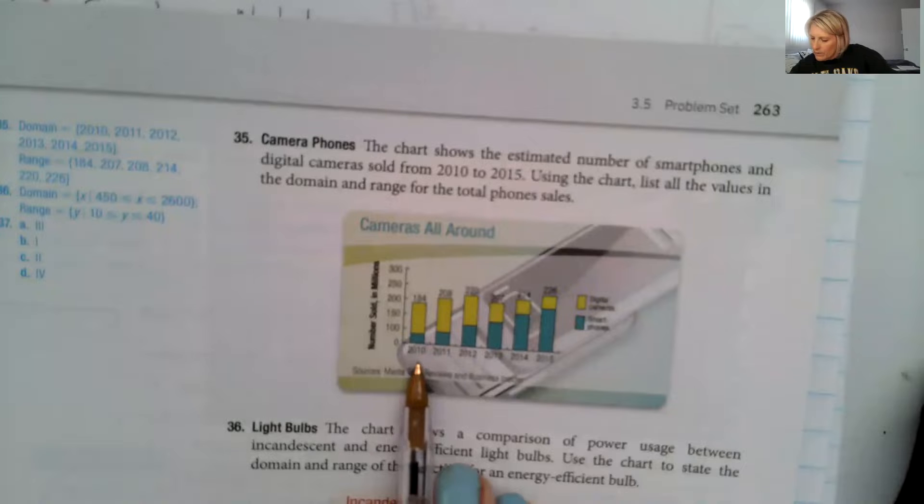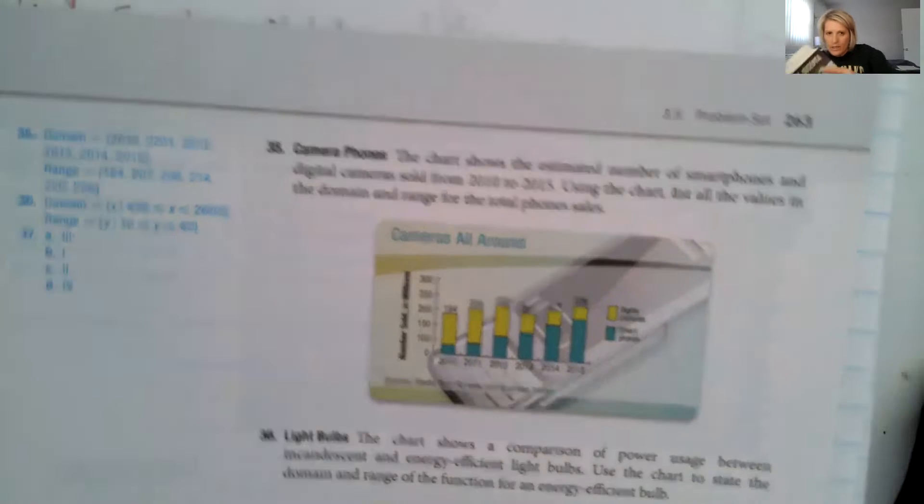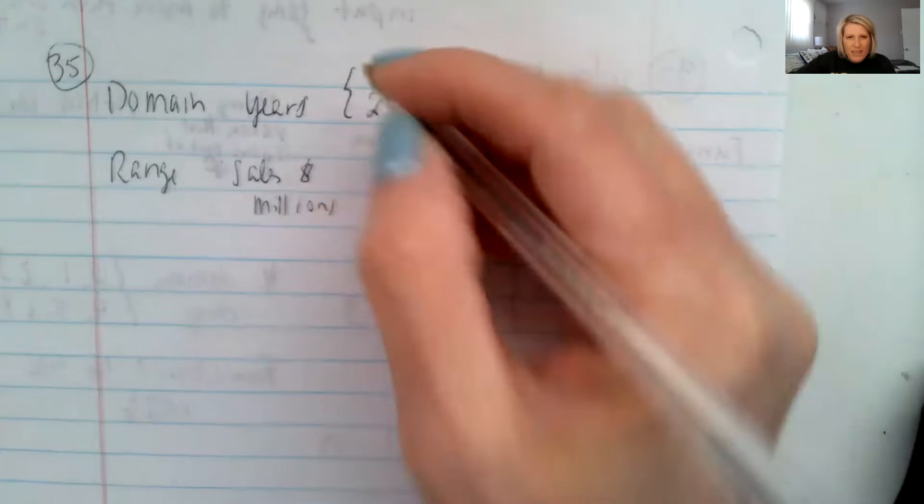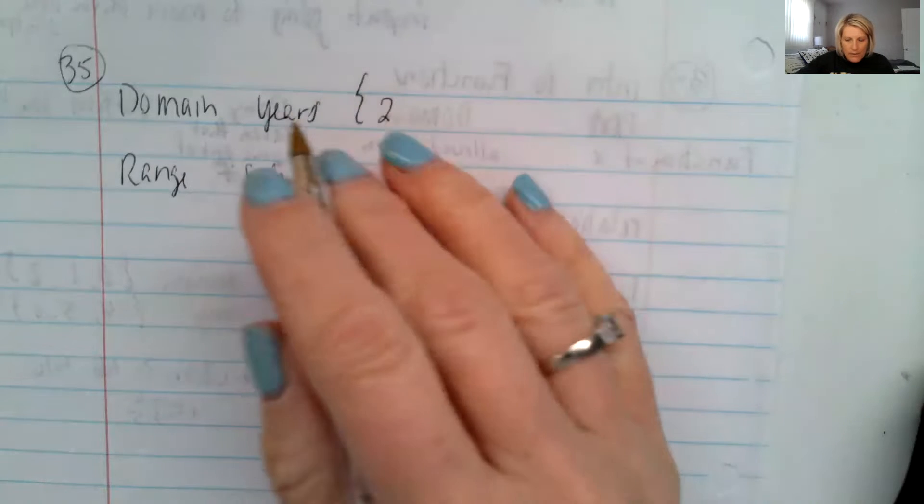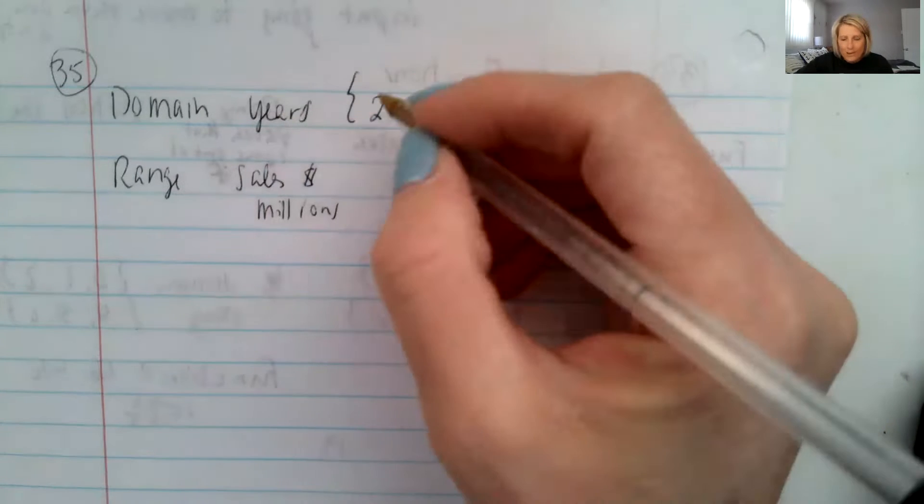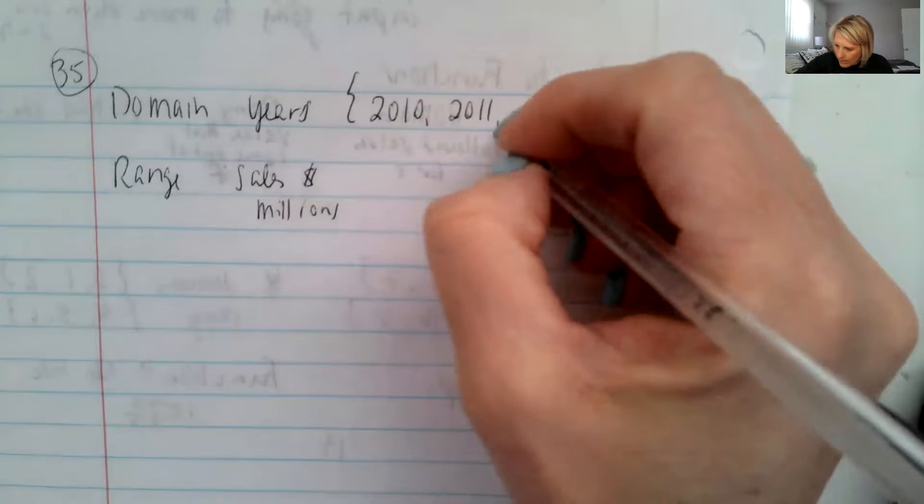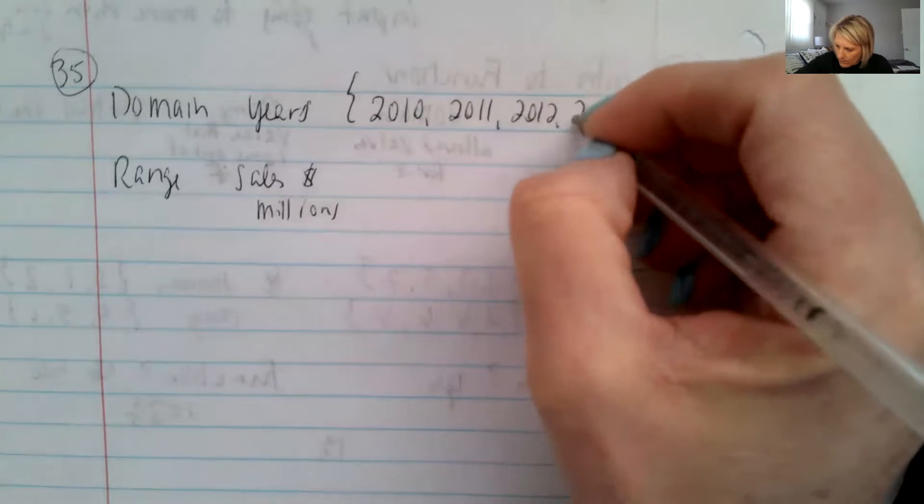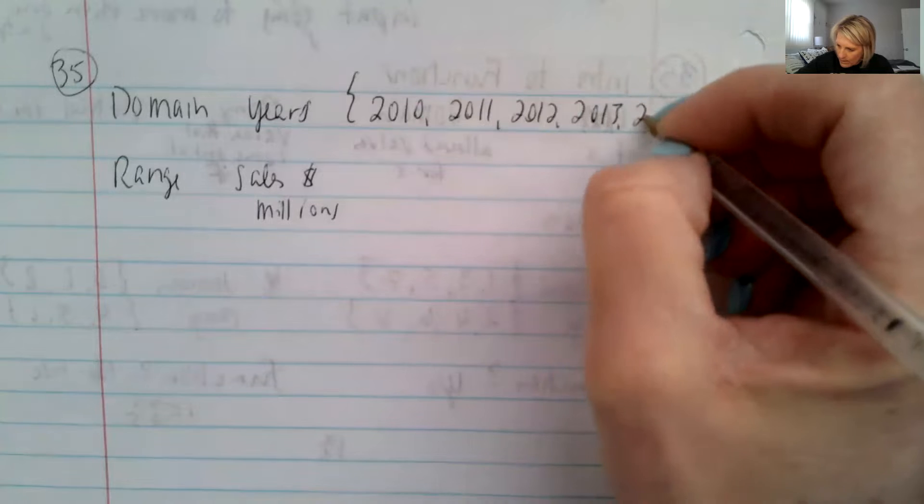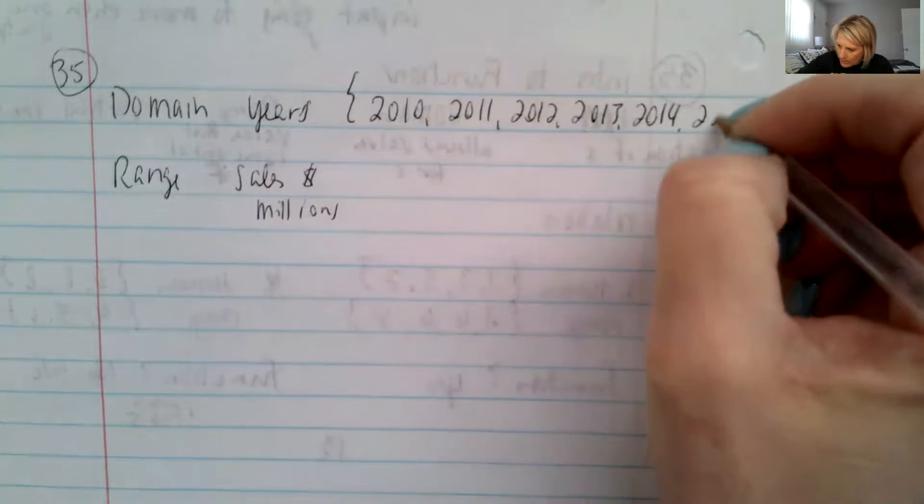So it looks like we have the years 2010 to 2015. So that is going to be, I'm listing it so I'm using the squiggly brackets. So 2010, 2011, 2012, 2013, 2014 and 2015.